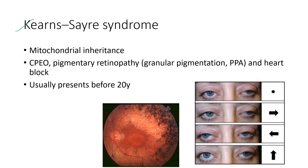Next is Kearns-Sayre syndrome. It has mitochondrial inheritance. The ocular features include chronic progressive external ophthalmoplegia, pigmentary retinopathy, and heart block. It usually presents before 20 years of age. A fundus image shows pigmentary retinopathy, and a clinical picture shows chronic progressive external ophthalmoplegia.